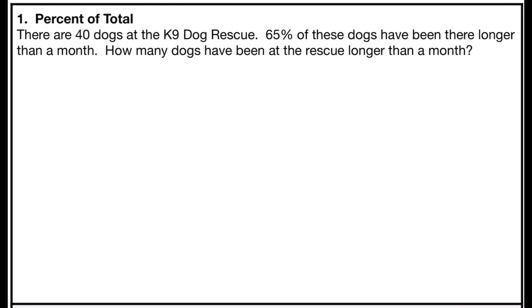Problem number one deals with the percent of a total. It says there are 40 dogs at the canine dog rescue. 65% of these dogs have been there longer than a month. How many dogs have been at the rescue longer than a month? So the keywords in this problem are 65% of these dogs. Of indicates multiplication, and these dogs refers to the 40 dogs from the beginning of the problem, the total number of dogs at the kennel.